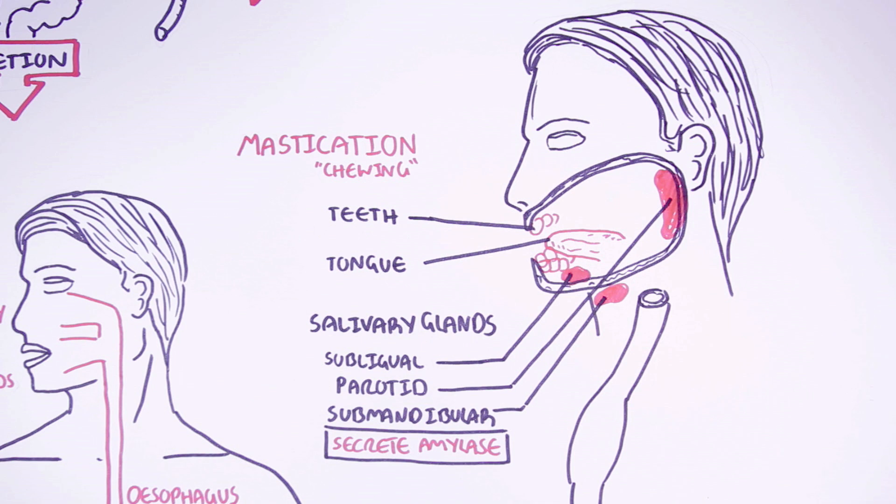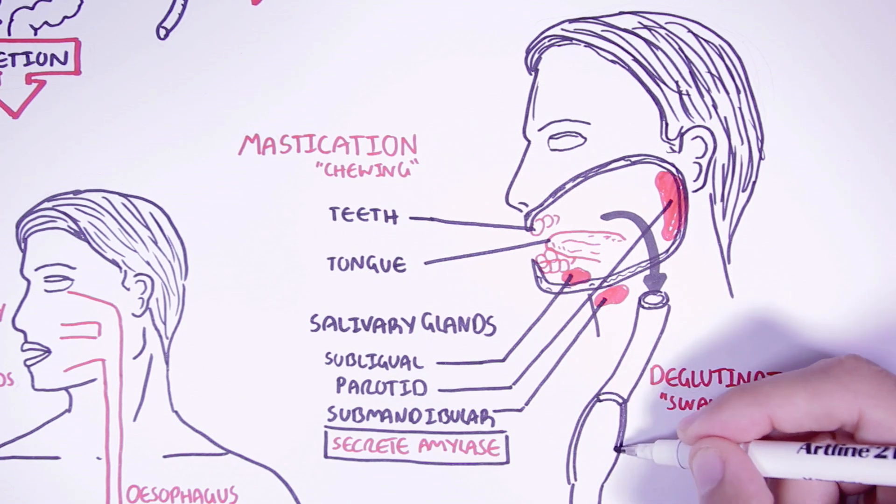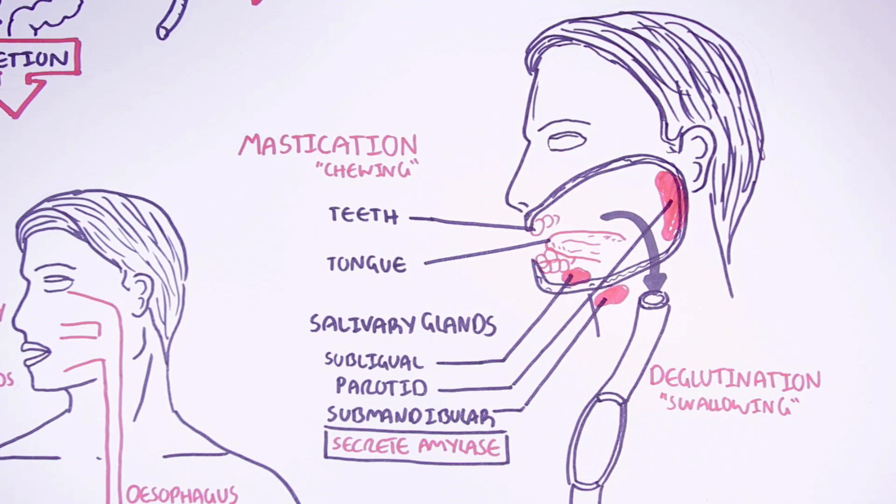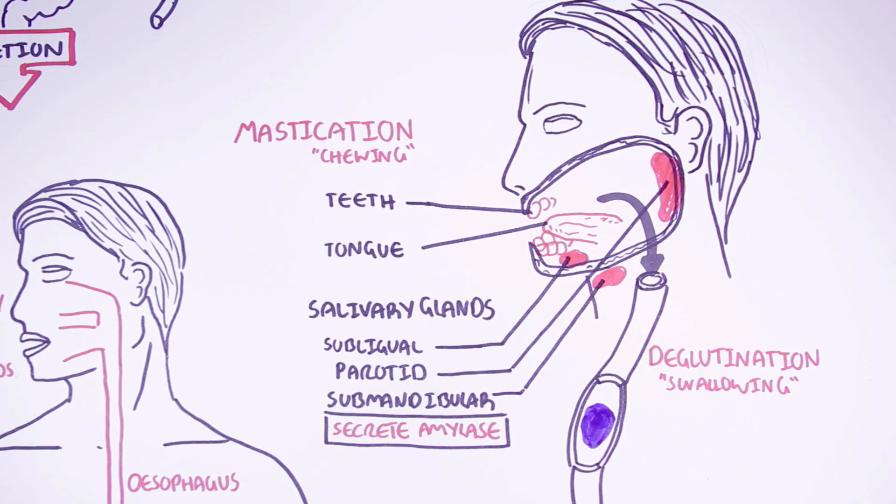Once the food leaves the oral cavity in a partially digested form, it is swallowed, a term called deglutination. The food is actually now referred to as a bolus. The bolus, which means ball in Latin, is a mass of food that has been chewed up.